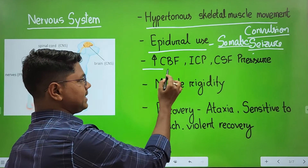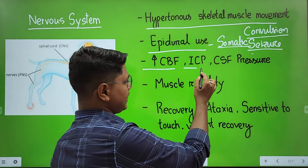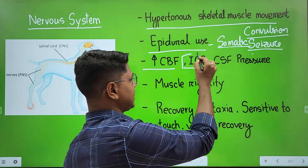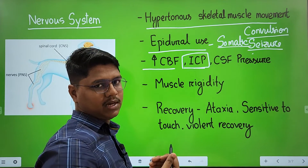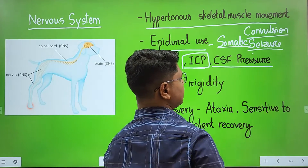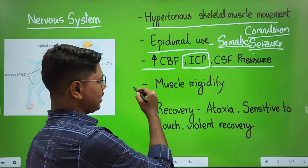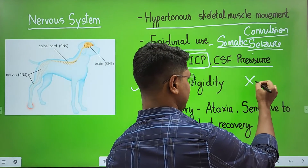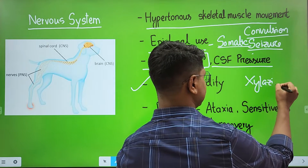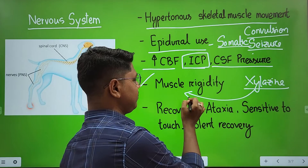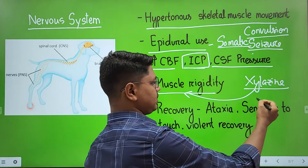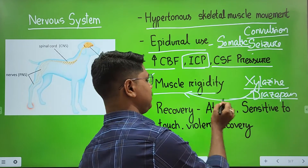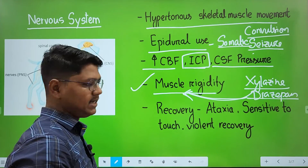Under the nervous system, you will find an increase in cerebral blood flow and also an increase in intracranial pressure. Recent articles suggest that the increase in cranial pressure is due to a decrease in venous return. They also increase CSF — cerebrospinal fluid — pressure. As already mentioned, they produce muscular rigidity. When Xylazine is used in combination, Xylazine produces very good muscle relaxation, so in combination the Xylazine negates this muscle rigidity. You can also combine with Diazepam, which is also a very good muscle relaxant, to negate this effect of muscular rigidity.